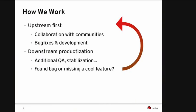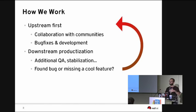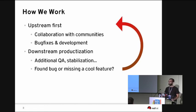At certain points in time, we take upstream projects and basically productize them downstream. That means we do some additional quality assurance, we do integration testing, we integrate different products and projects together so that we make sure they really work well. And if we find a bug or want to add a new feature, it all repeats — we go to upstream, we send patches, we discuss, and so on.